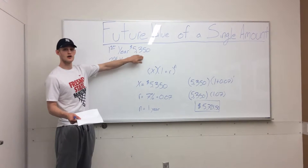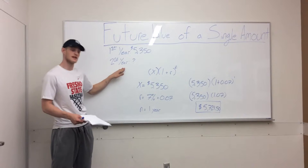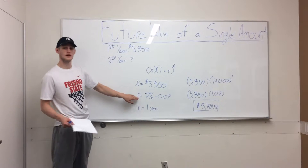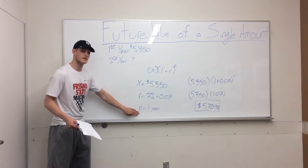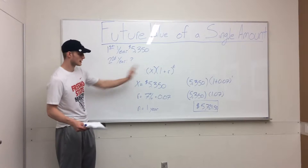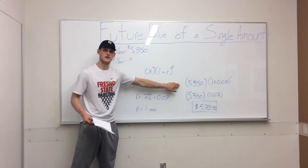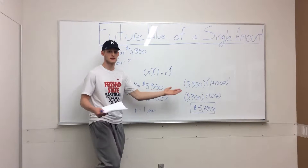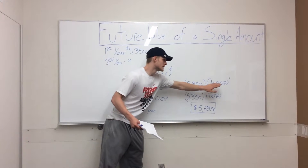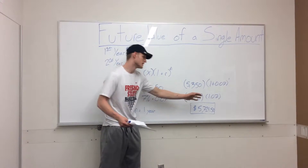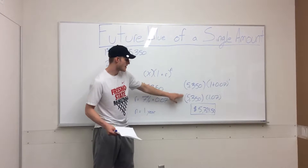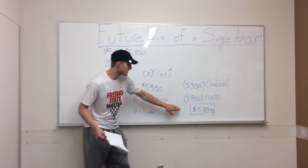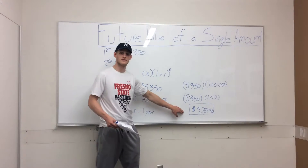So now our X is going to equal $5,350. Our rate of return stays the same, and our number of years stays the same because we're only going to do it for one year. Plugging in, we have $5,350 times one — that's how much we expect to get back — and we're going to get 7% of the $5,350. Adding all together and doing the exponent, we get $5,350 times 1.07, which gives us $5,724.50.